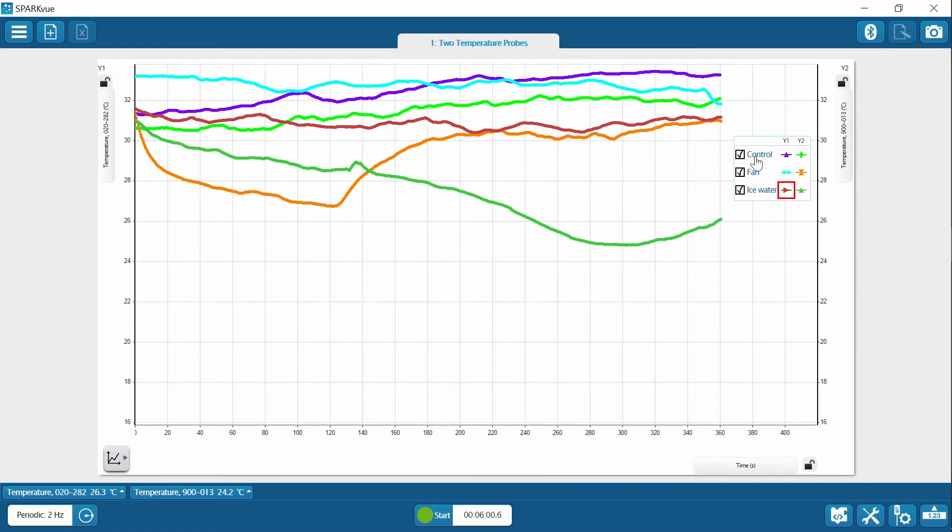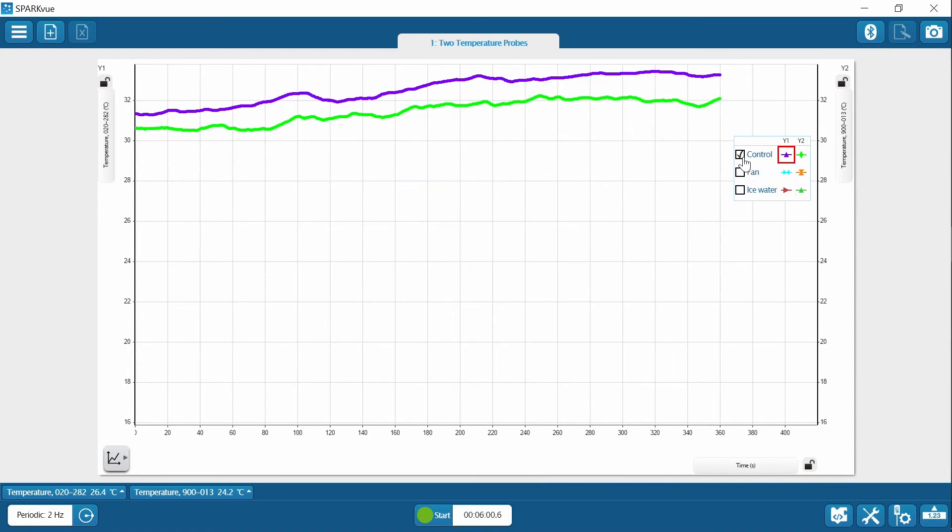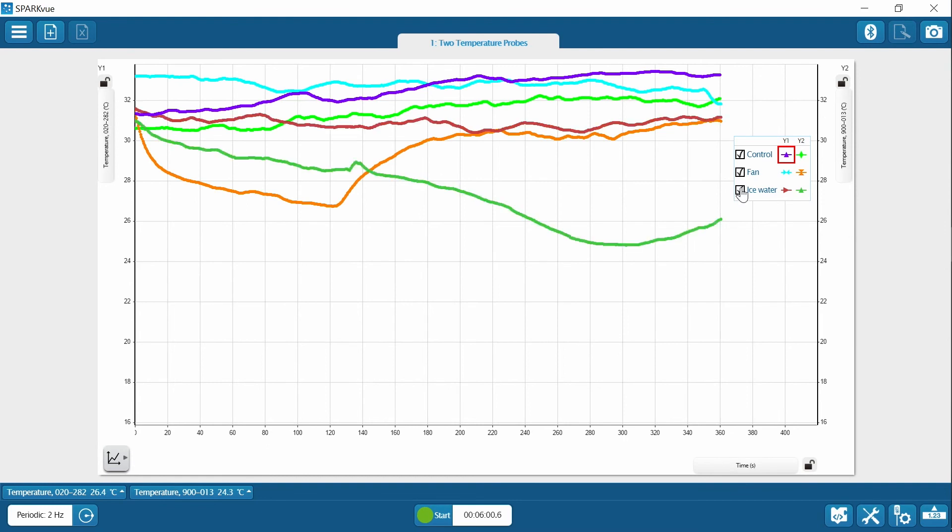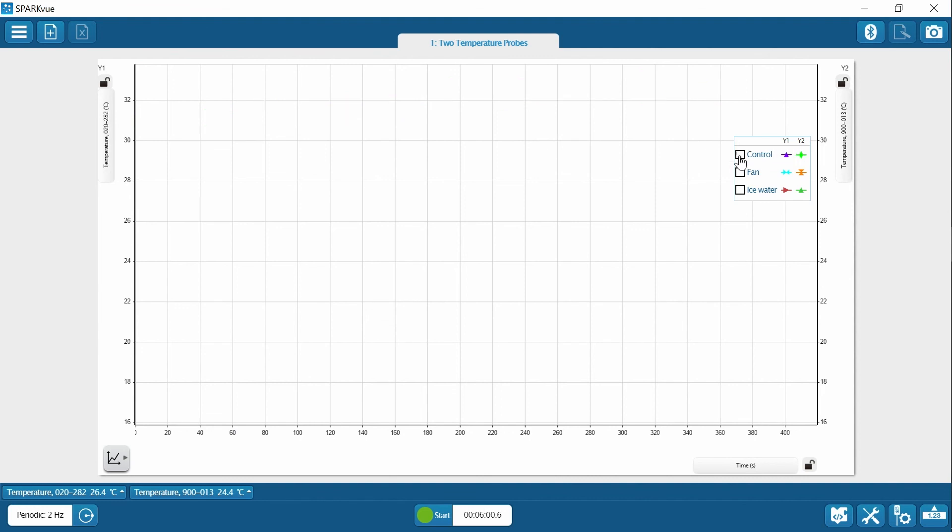You'll be looking for trends across all three conditions captured in SparkView data. You can hide and show runs in the legend. So you can look at one condition at a time or see all three runs at once. It's best to view each run individually at full scale. So click the scale button as needed. Let me turn on the fan run here and scale it.